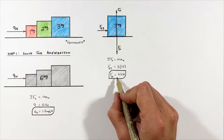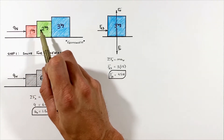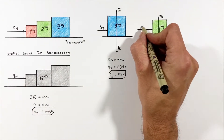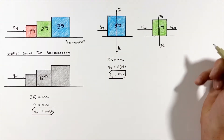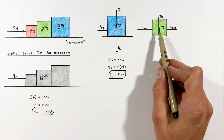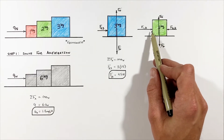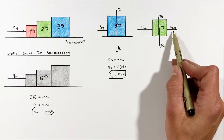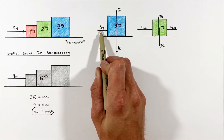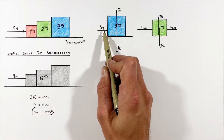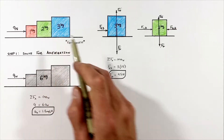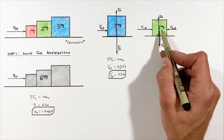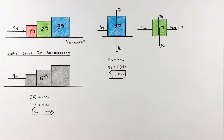Now that we know the normal force between blocks two and three, we apply that knowledge to the free body diagram of the two-kilogram block. Again, the weight and ground normal force cancel out. We now have two horizontal forces. The force by block three on block two is the action-reaction pair to the force by block two on block three. According to Newton's third law, if block two pushes on block three with 4.5 newtons to the right, then block three pushes back on block two with 4.5 newtons to the left.